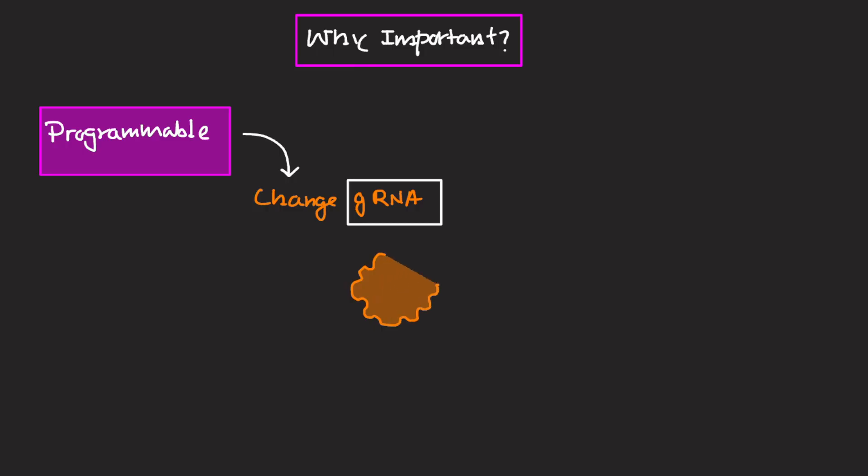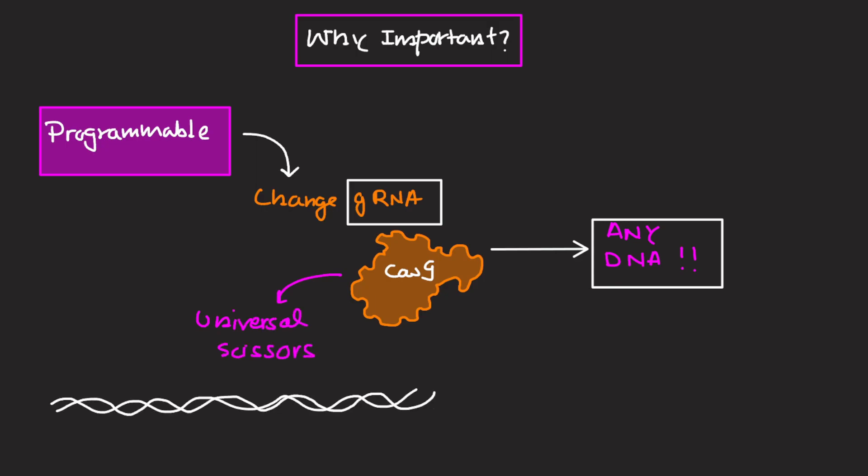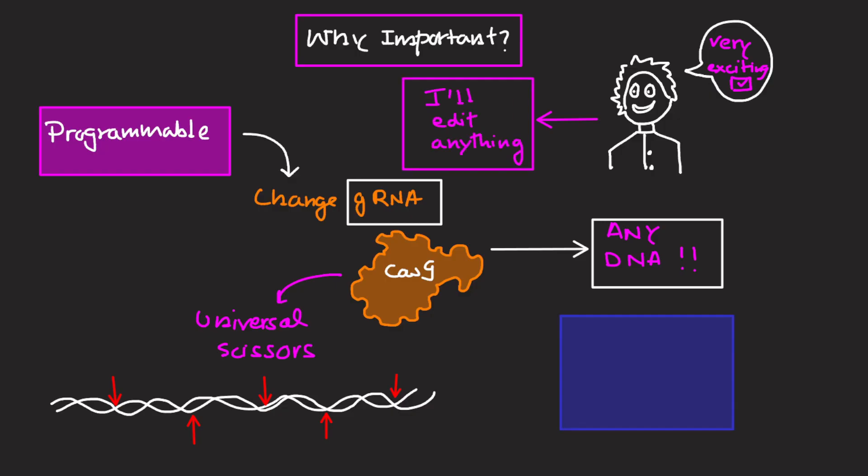Now let's come to the final point, which is why CRISPR is so important. The beauty of this system is how programmable it is. By simply changing the guide RNA, Cas9 can be directed to almost any DNA sequence. It's like having universal scissors. You just need to give a new instruction and it will cut wherever you want. That's why scientists got so excited, because nature already built a precise and powerful tool for gene editing, and we just had to learn how to use it.